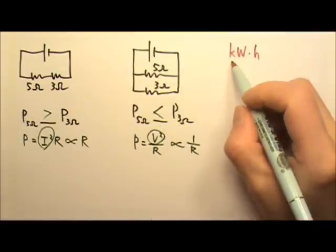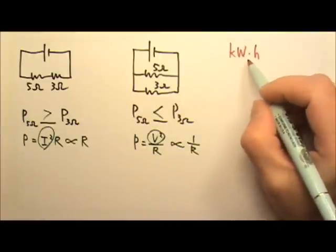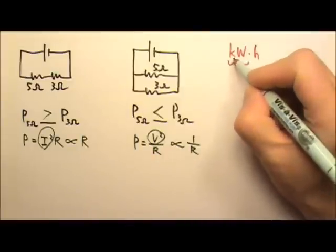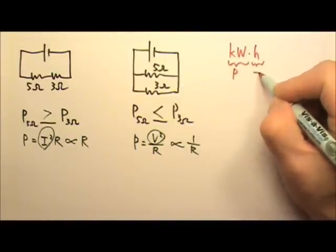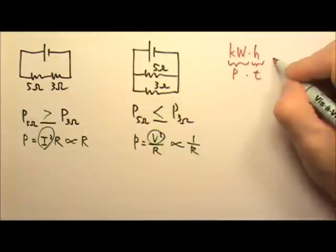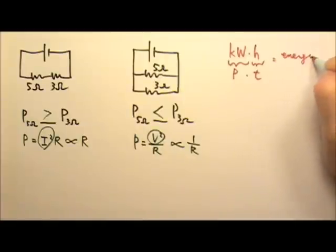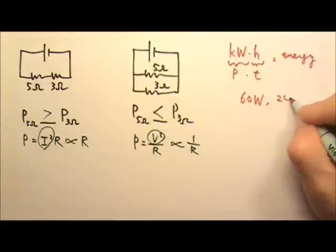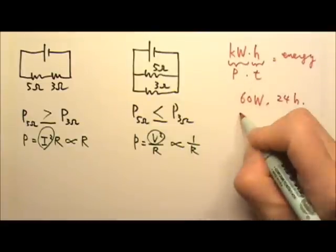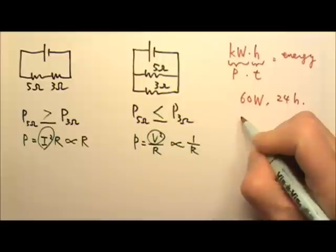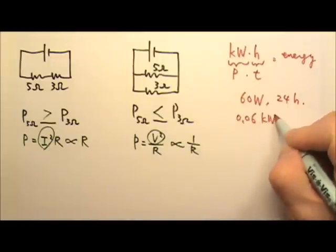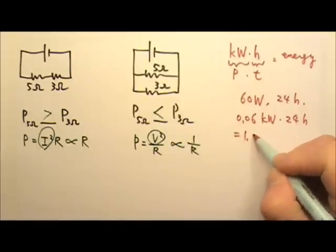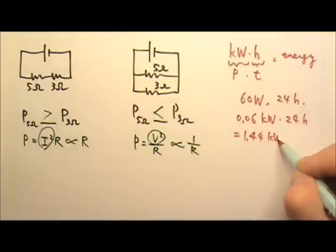Remember we talked about this unit, kilowatt hour. It is kilowatt times hour. So this is a unit for energy because kilowatt is a unit for power, hour is a unit for time. Power times time gives us energy. Let's say if you have a 60 watt light bulb and you keep it on for 24 hours, the amount of energy it consumes in kilowatt hour would be 0.06 kilowatt times 24 hours. So the energy it consumes will be 1.44 kilowatt hour.